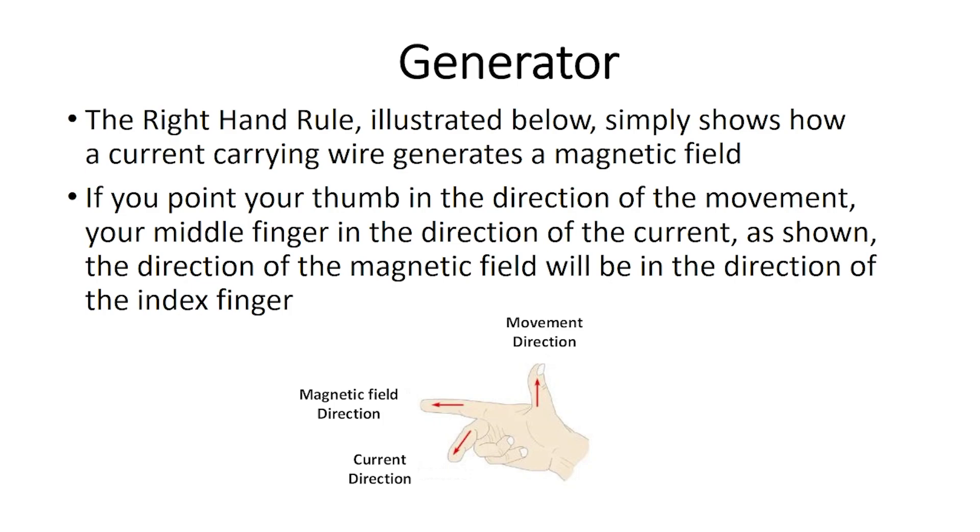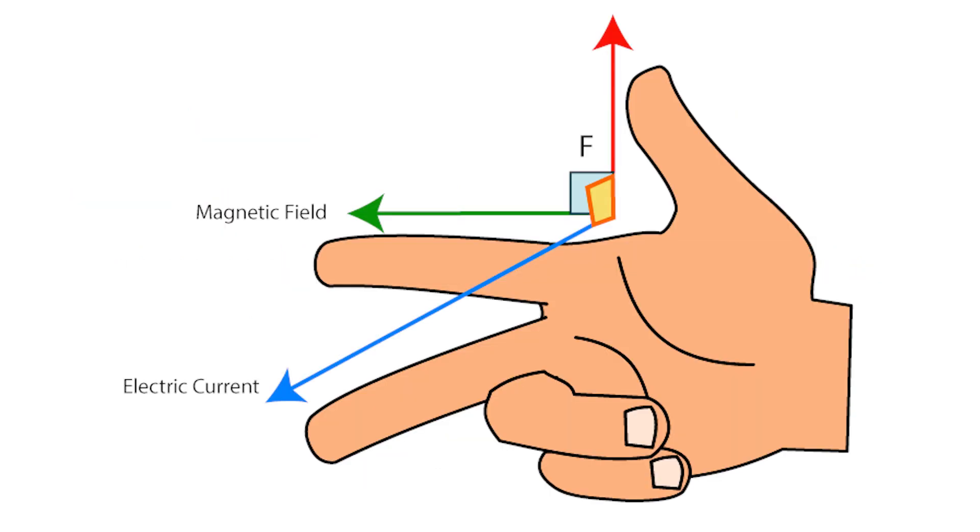The right-hand rule, illustrated below, simply shows how a current carrying wire generates a magnetic field. If you point your thumb in the direction of the movement, your middle finger in the direction of the current, the direction of the magnetic field will be in the direction of the index finger. Pay attention to the fact that there is 90 degrees angle between every two fingers.